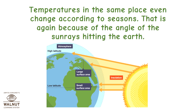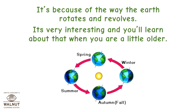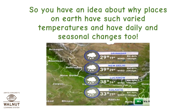Temperatures in the same place even change according to seasons. That is again because of the angle of the sun's rays hitting the earth — because of the way the earth rotates and revolves. It's very interesting and you will learn about that when you are a little older. So, you now have an idea about why places on earth have such varied temperatures and have daily and seasonal changes too.